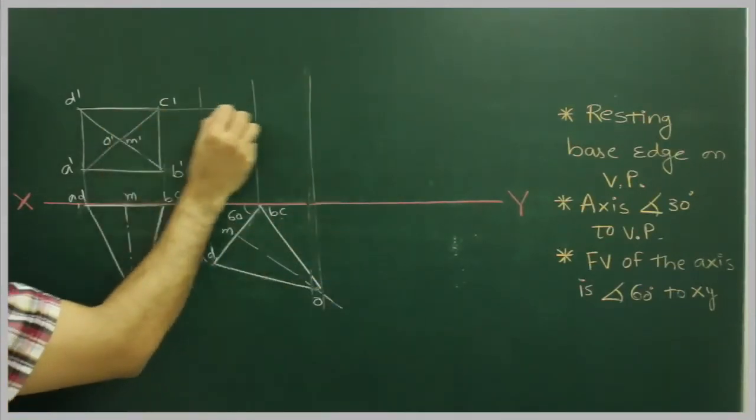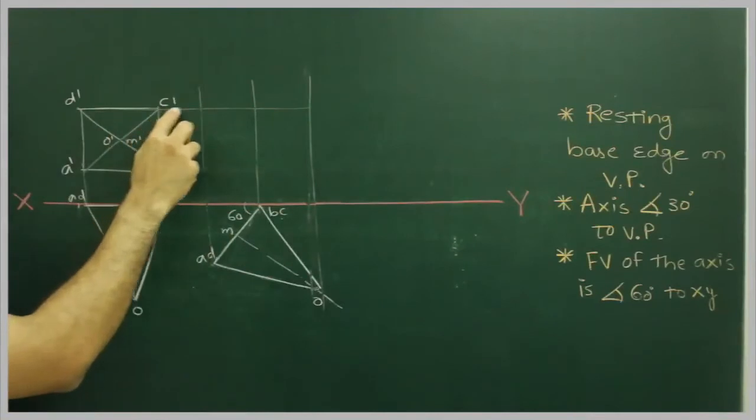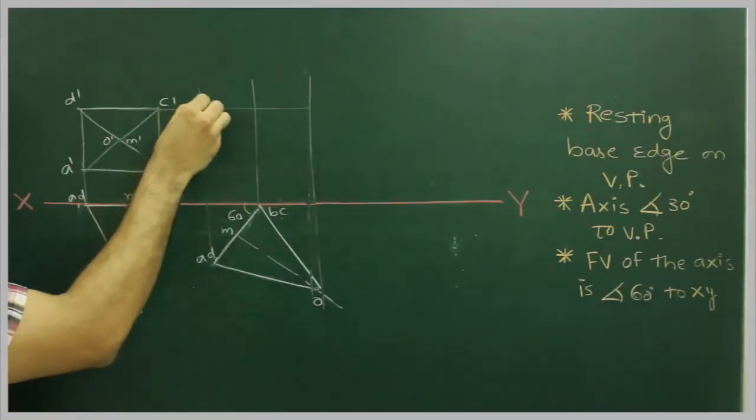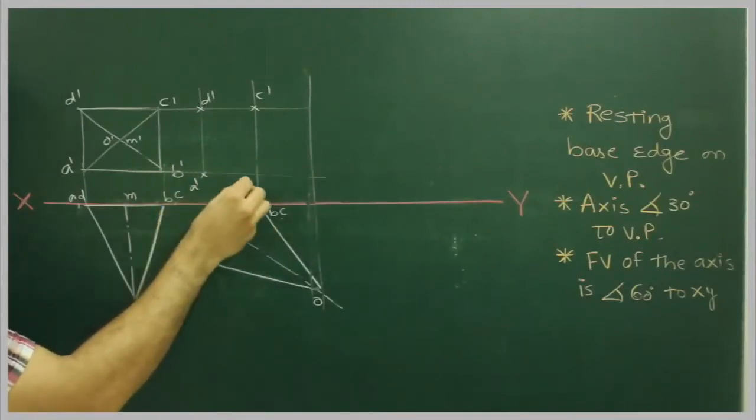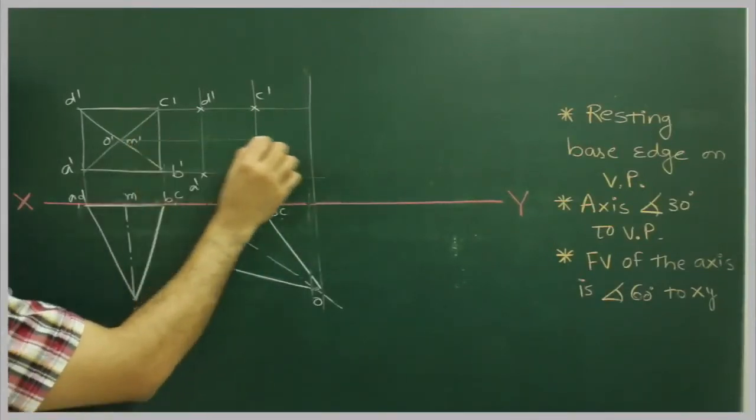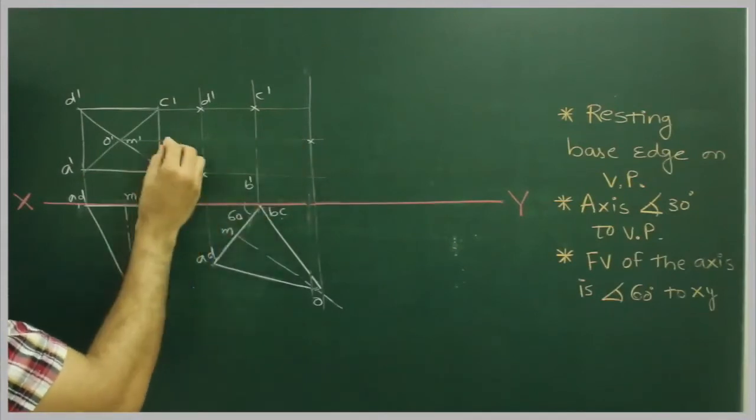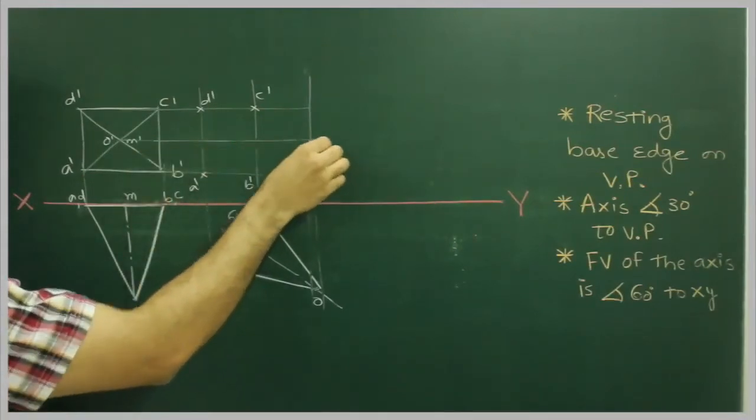See this. Then the next thing, d dash, c dash from here. This is d dash, c dash. This is a dash, d dash. This is o dash.